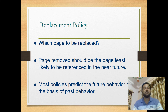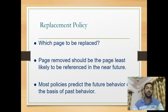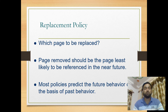The victim frame is identified on the basis that it is least likely to be referenced in the near future — it must not be needed soon for execution. Most replacement policies predict future behavior based on past behavior; on that basis the victim frame is identified and the page gets replaced.